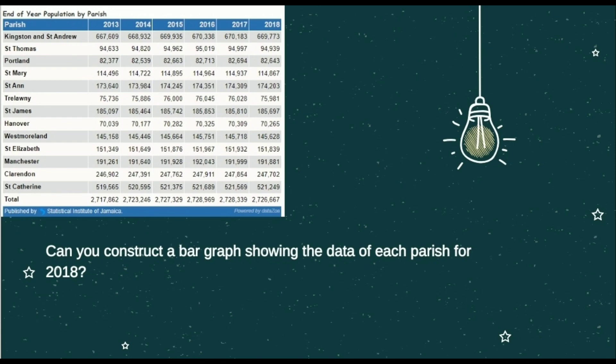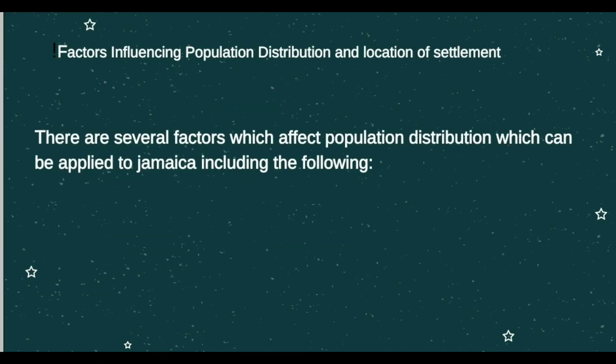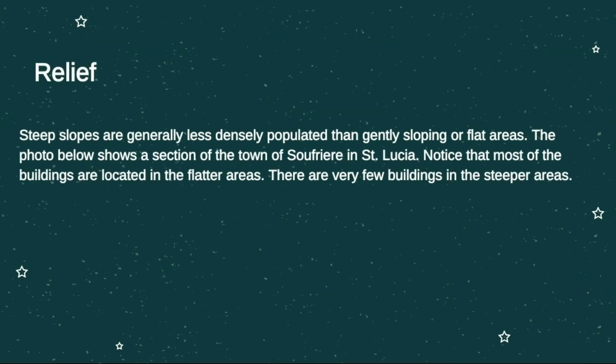Now we'll be speaking on factors that influence population distribution and location of settlement. There are several factors which affect population distribution that can be applied to Jamaica. The first factor is relief. Steep slopes are generally less densely populated than gently sloping or flat areas because steep slopes are very inaccessible — it's very hard to travel on them or to build settlements there, as they are prone to erosion and are very unstable. Versus gently sloping or flat areas, which are easy to build on, accessible, and close to road and communication channels.